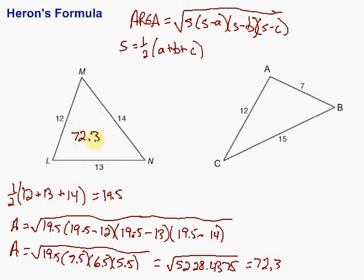So the area of this triangle is about 72.3, and if we had units, it would be units squared, because remember, areas are in square units. That's the first one.